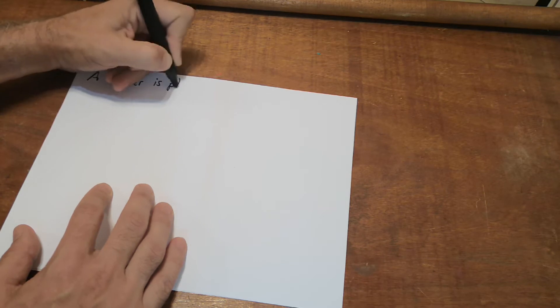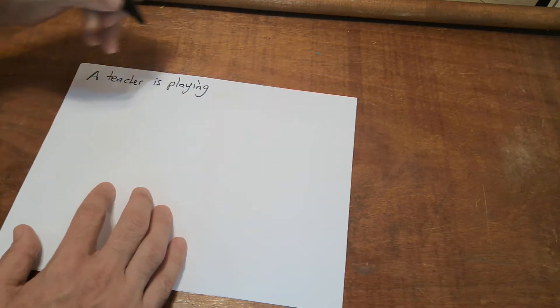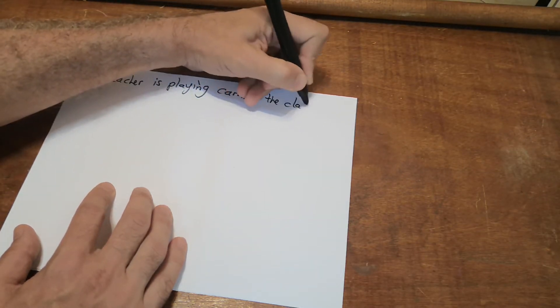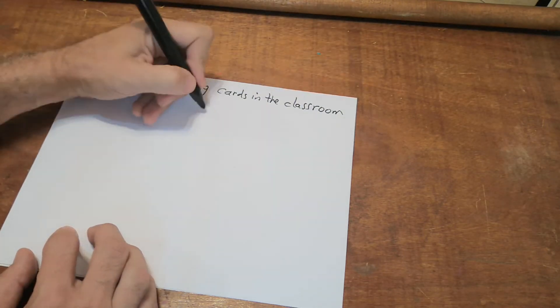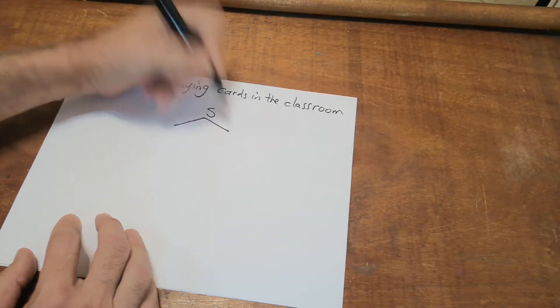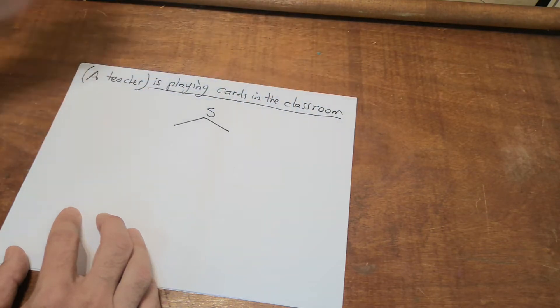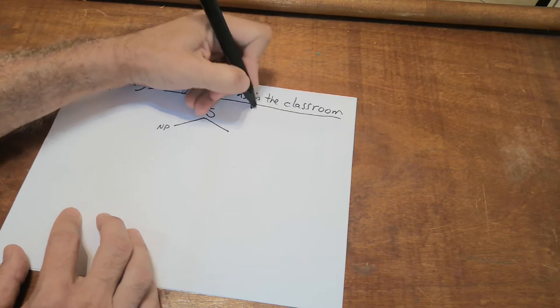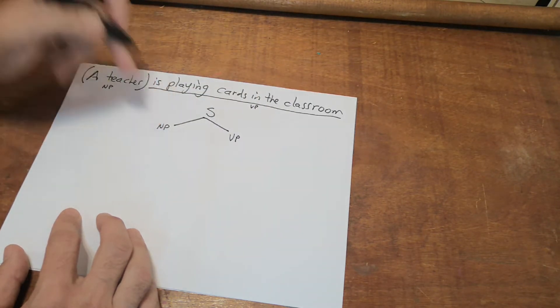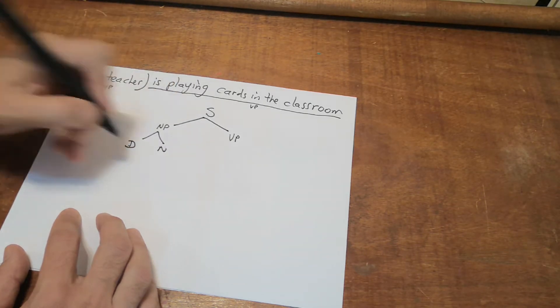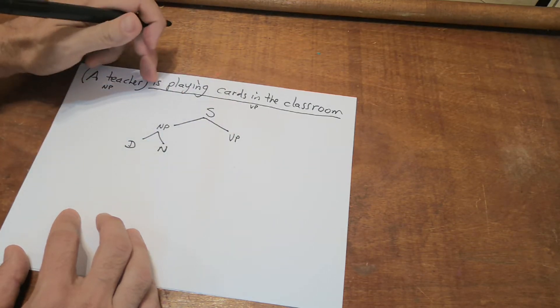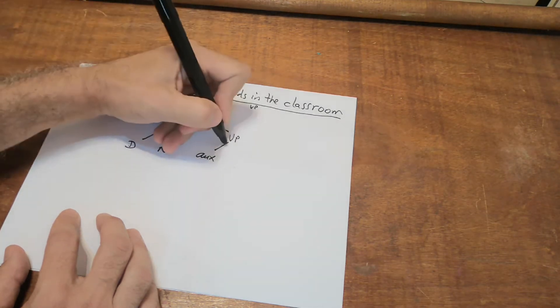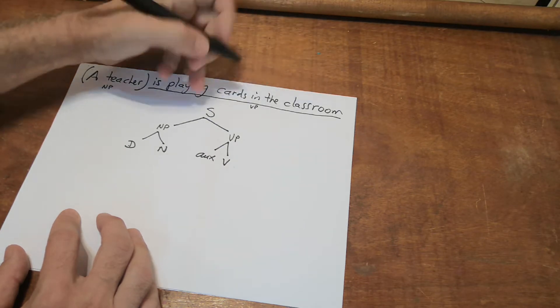Let's do the third one. The third one says: 'A teacher is playing cards in the classroom.' This is a sentence — it has a subject and a predicate. The subject is 'a teacher,' the predicate is 'is playing cards in the classroom.' 'A teacher' is a noun phrase; 'is playing cards' is a verb phrase. The noun phrase has two elements: determiner and noun. The verb phrase has an auxiliary verb 'is,' a verb, and a noun phrase.